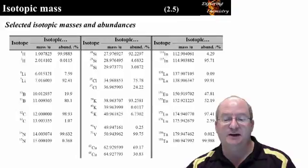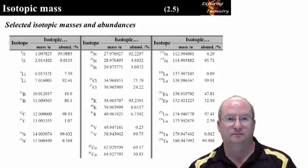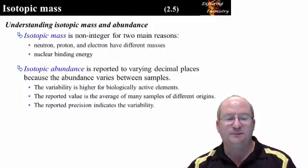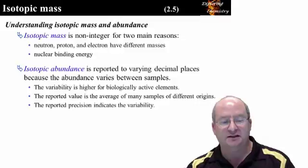This is, by the way, the realm of nuclear chemistry and nuclear physics, and we're not going to cover nuclear chemistry further in this course. The explanations for non-integer isotopic mass and the varying precision of isotopic abundance are summarized here.